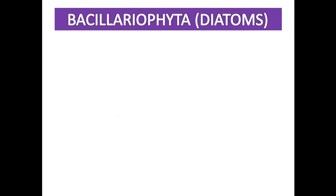The thickenings at the ends of the raphe are called polar nodes.